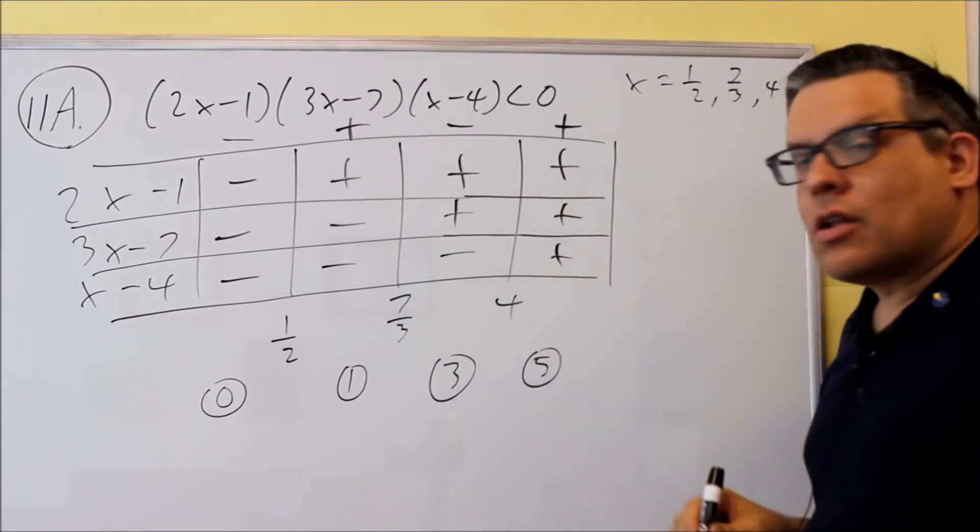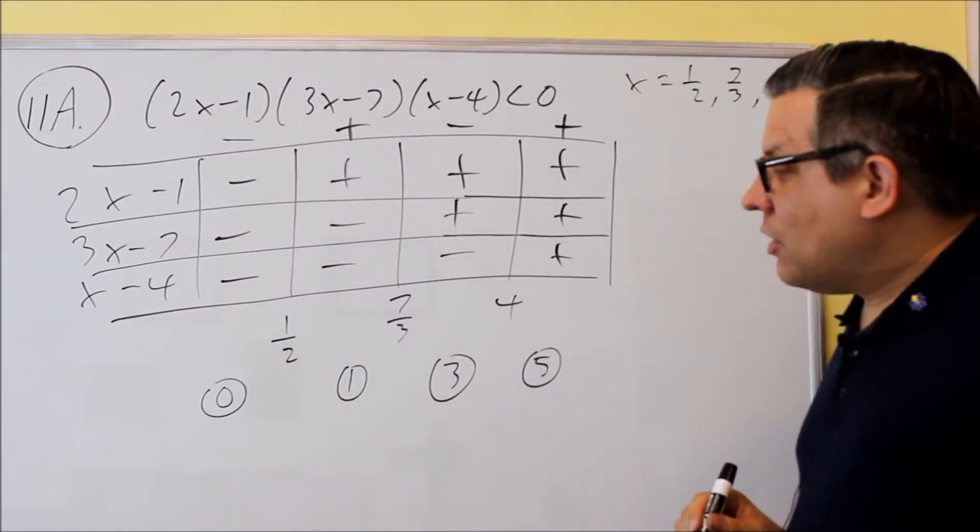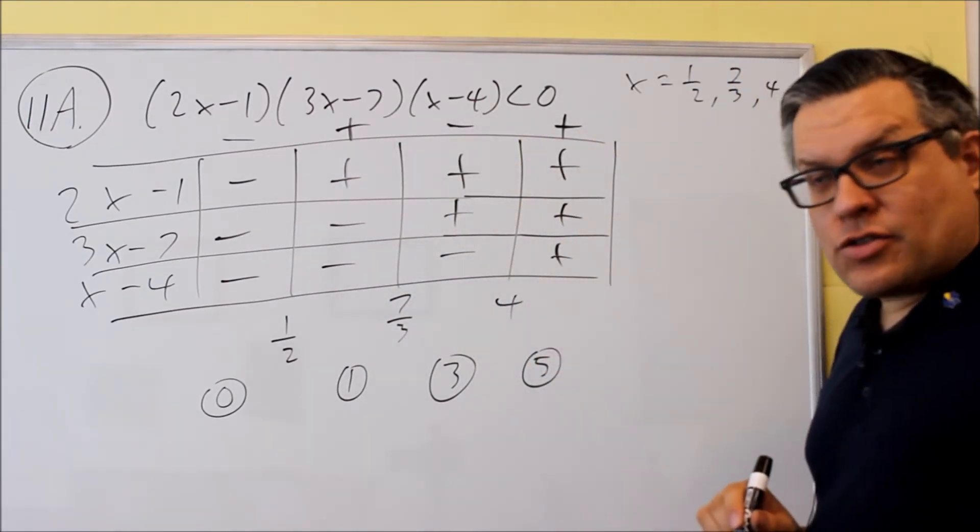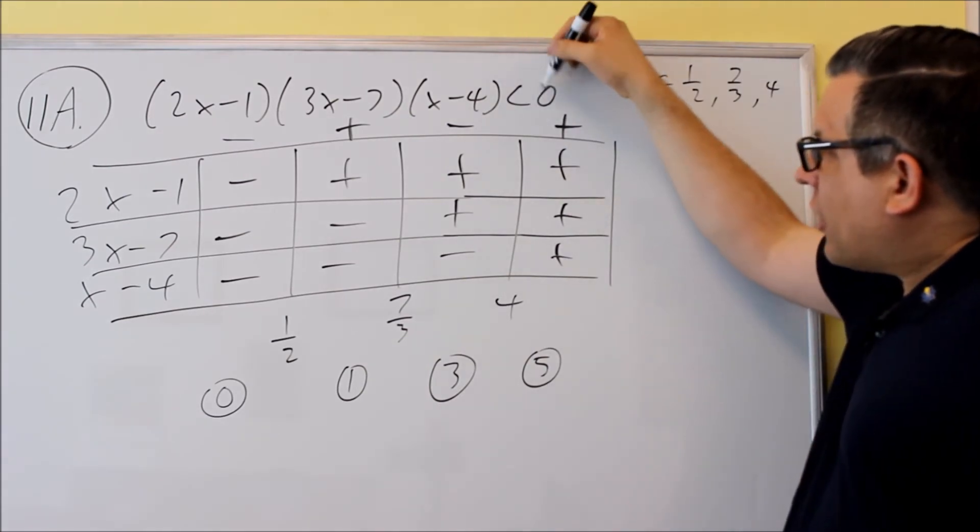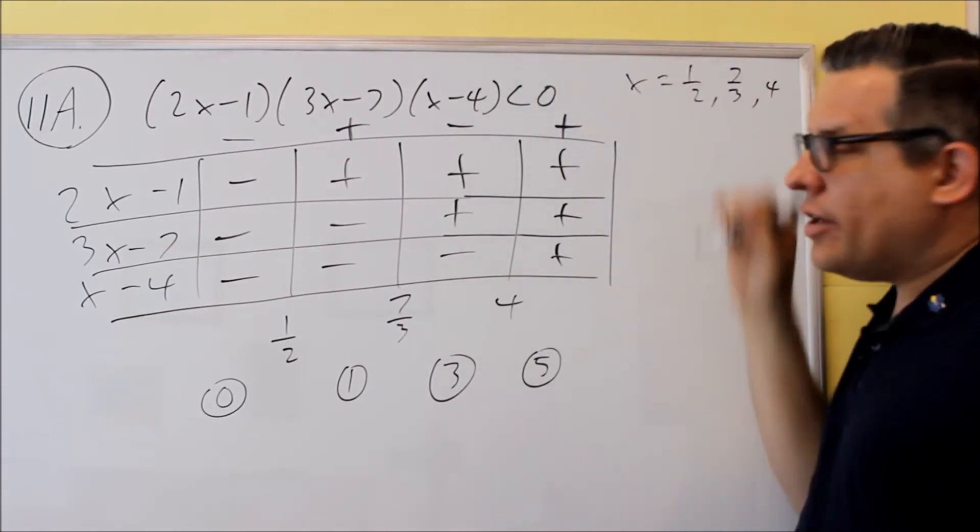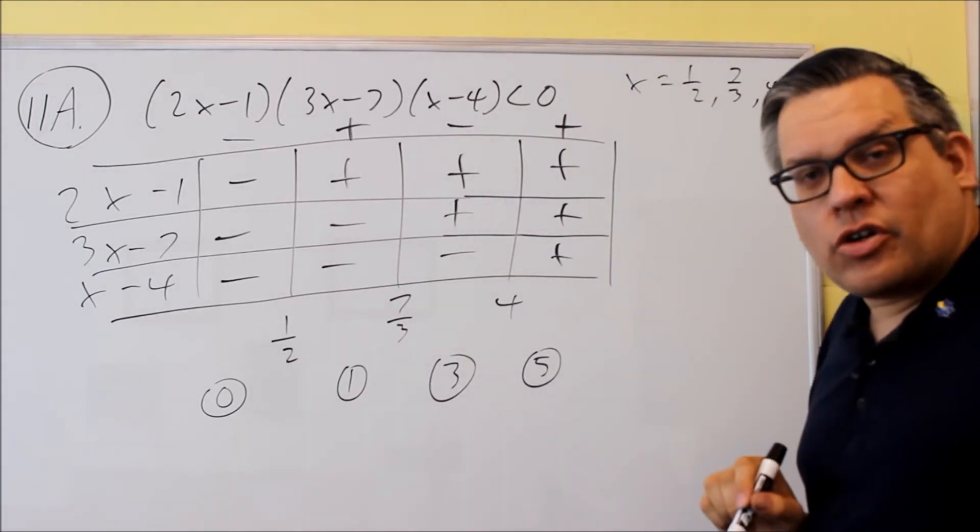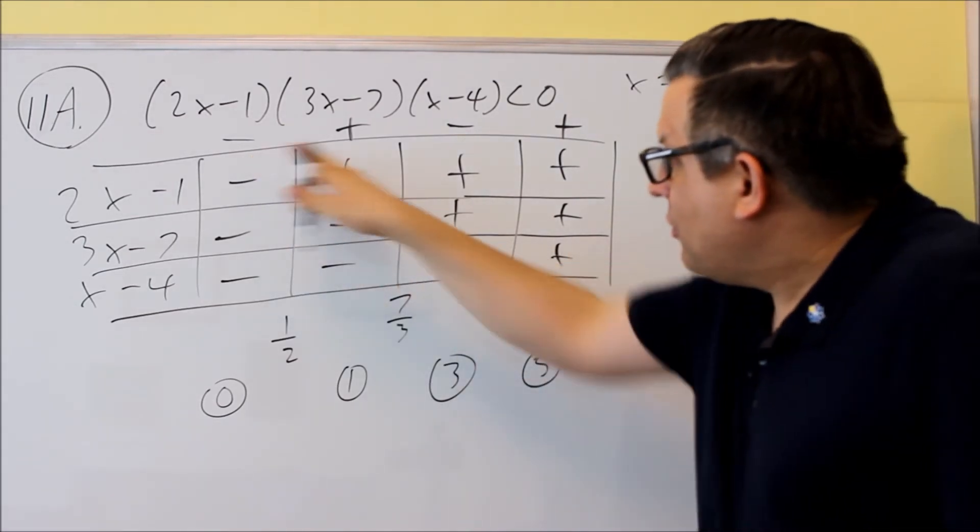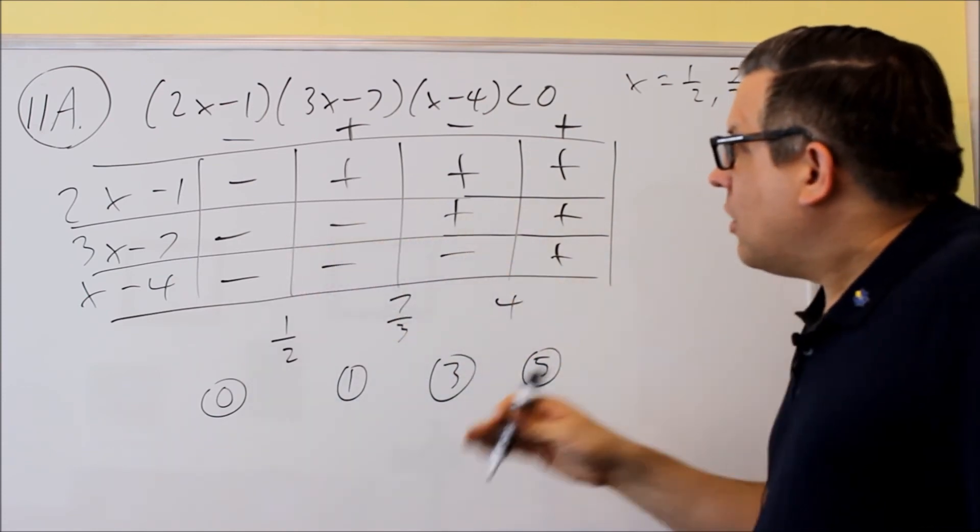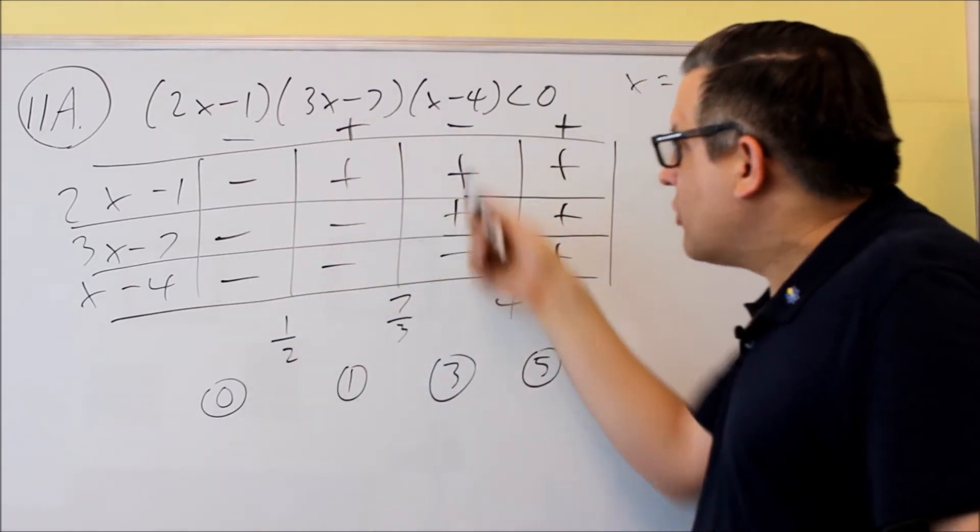So we get negative, positive, negative, positive. We're finally ready to write our answer. Now it's important to take a look at whatever sign you see here. If you see less than or less than or equal to zero, you're looking for negative intervals here, sections. So here's negative and here's a negative.